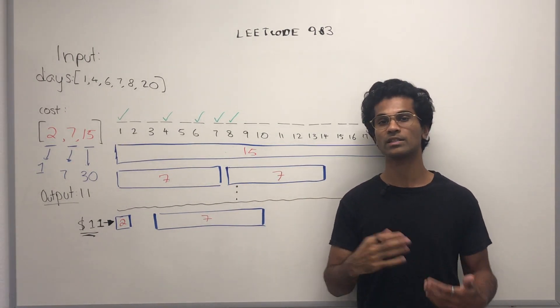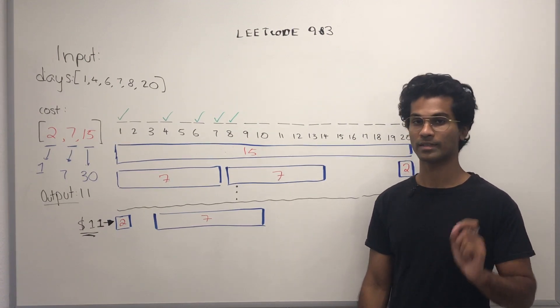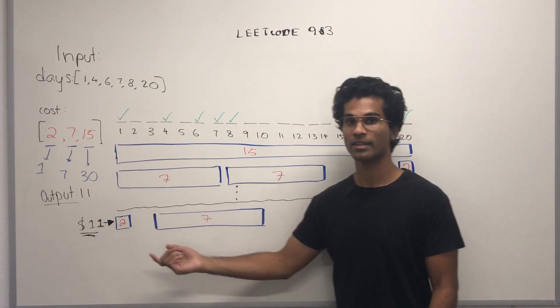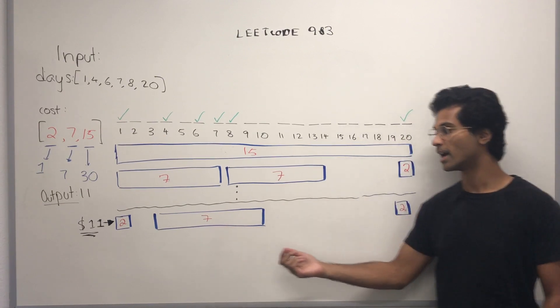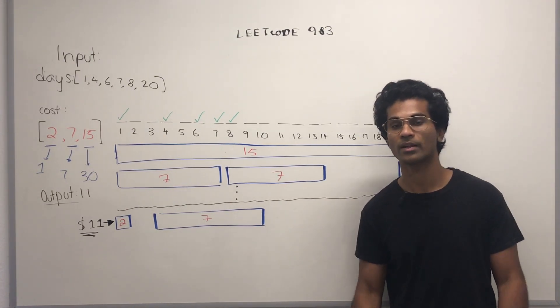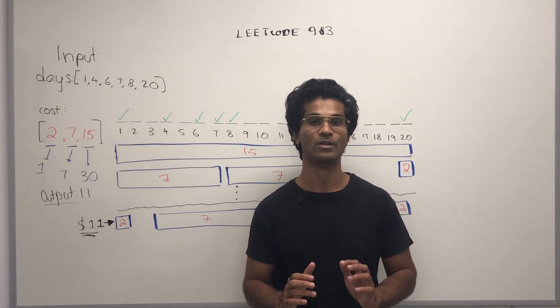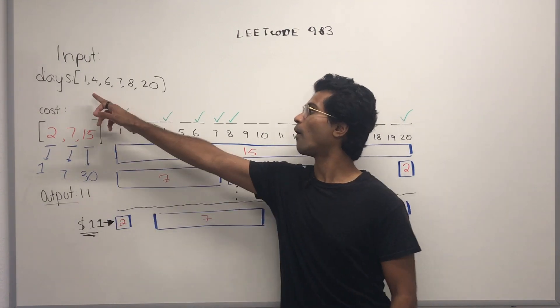There's various different approaches, but one of the minimal ways that we can travel is this. First, we buy a one-day pass, which is costing $2. Then, we buy a seven-day pass, which costs $7. And then, we buy a one-day pass, which costs $2. So, our job is to figure out what's the minimum amount that we can spend, so that we can travel on all of these days.